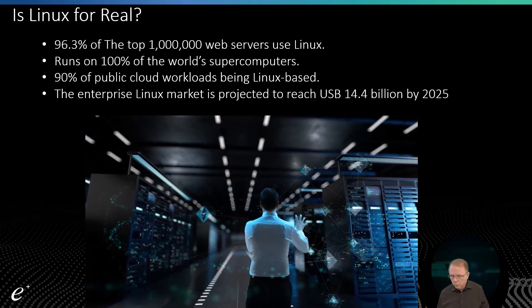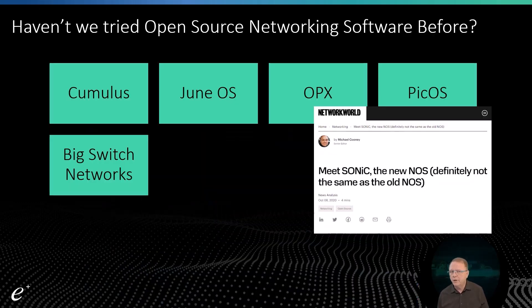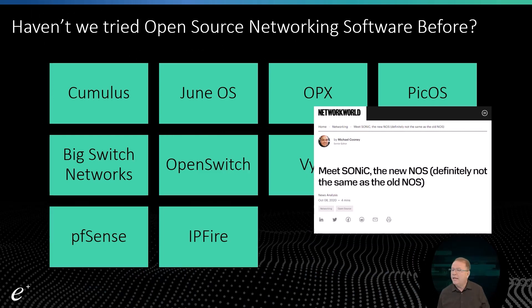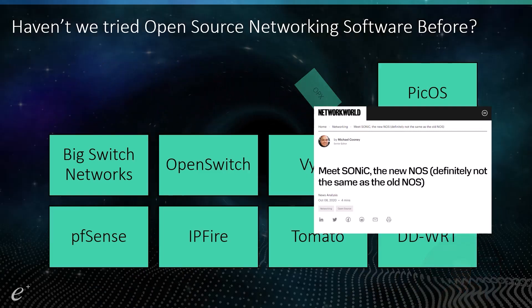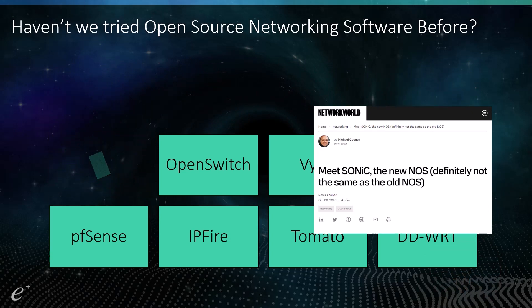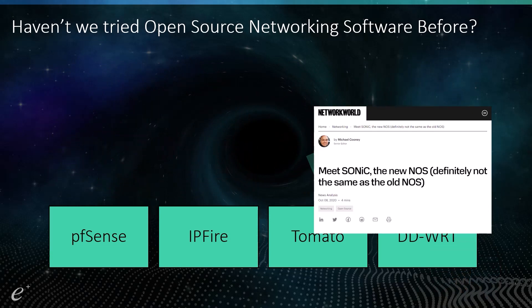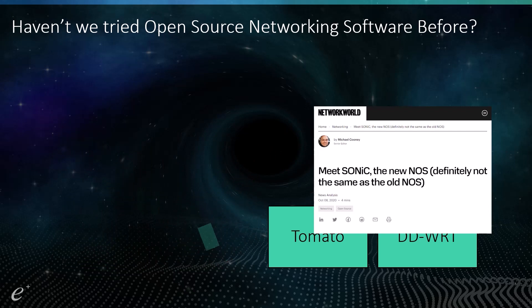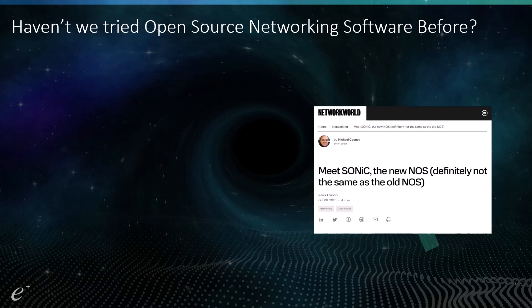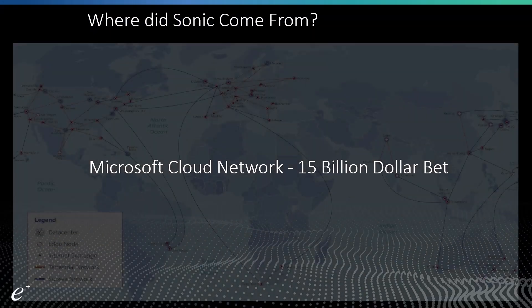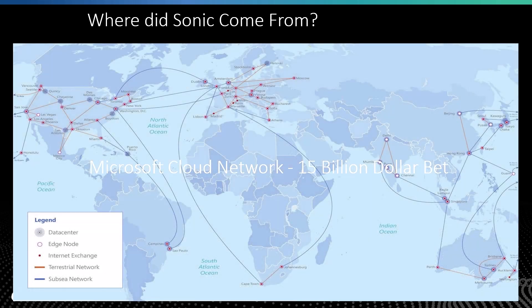You might be thinking we've tried open source networking before — DWRT, Tomato, and others. Some have been reasonably accessible; VyOS is very nice. But over time they've all kind of faded away. Why is this different? This is different because it was built not for individual devices or small markets, but for very large environments — in particular, Microsoft. Microsoft developed SONiC to run their huge network, and they released it open source, which is very cool for us.